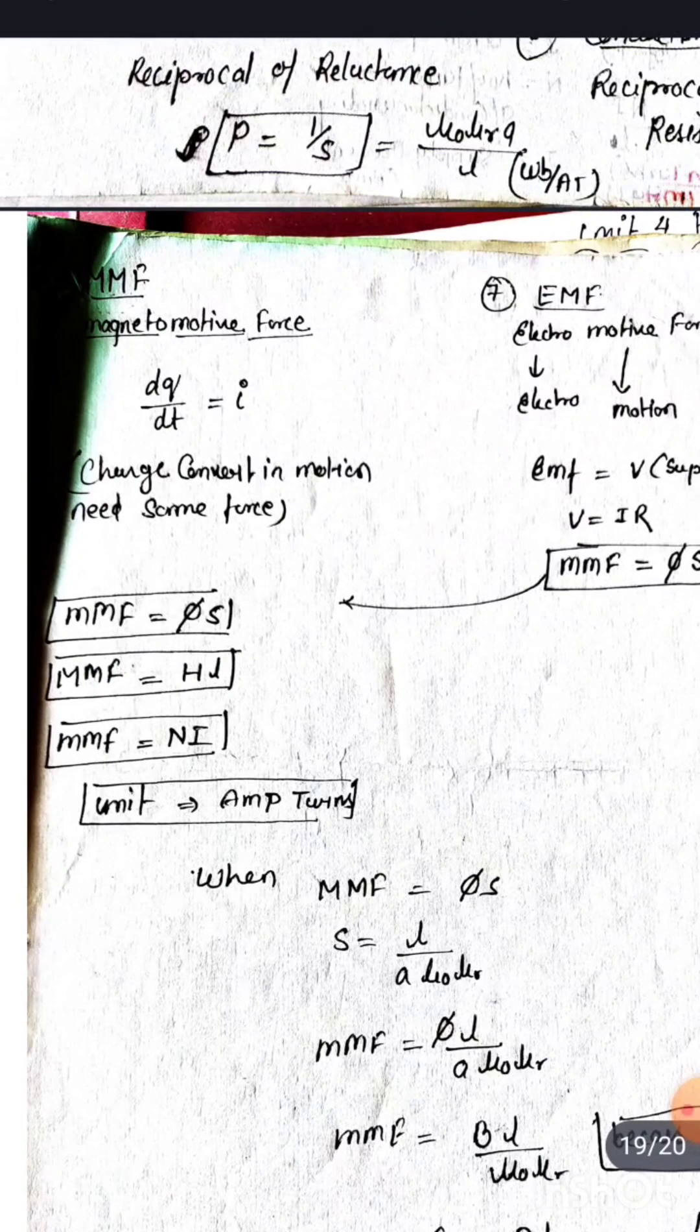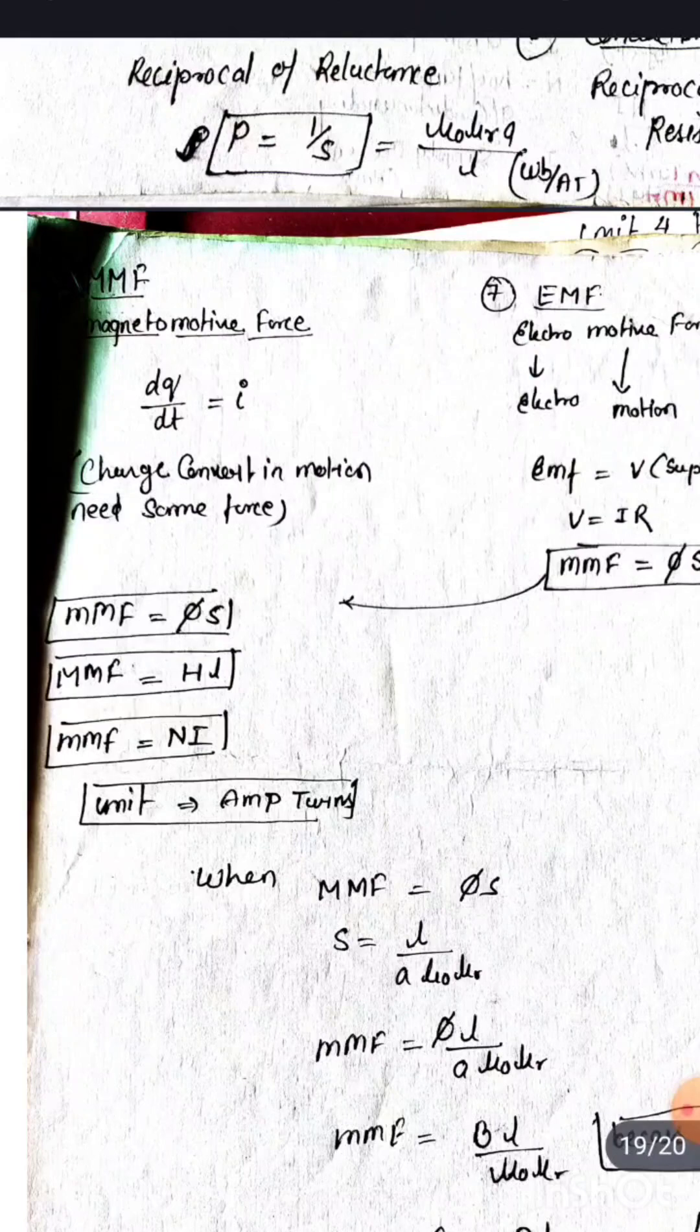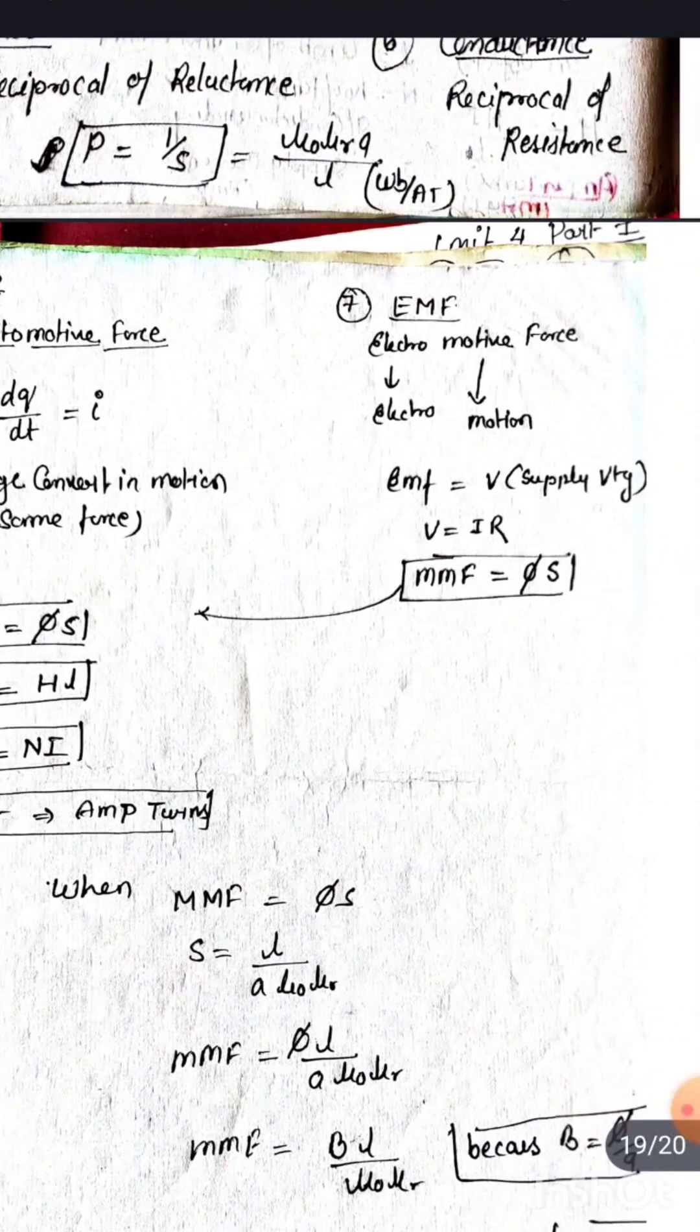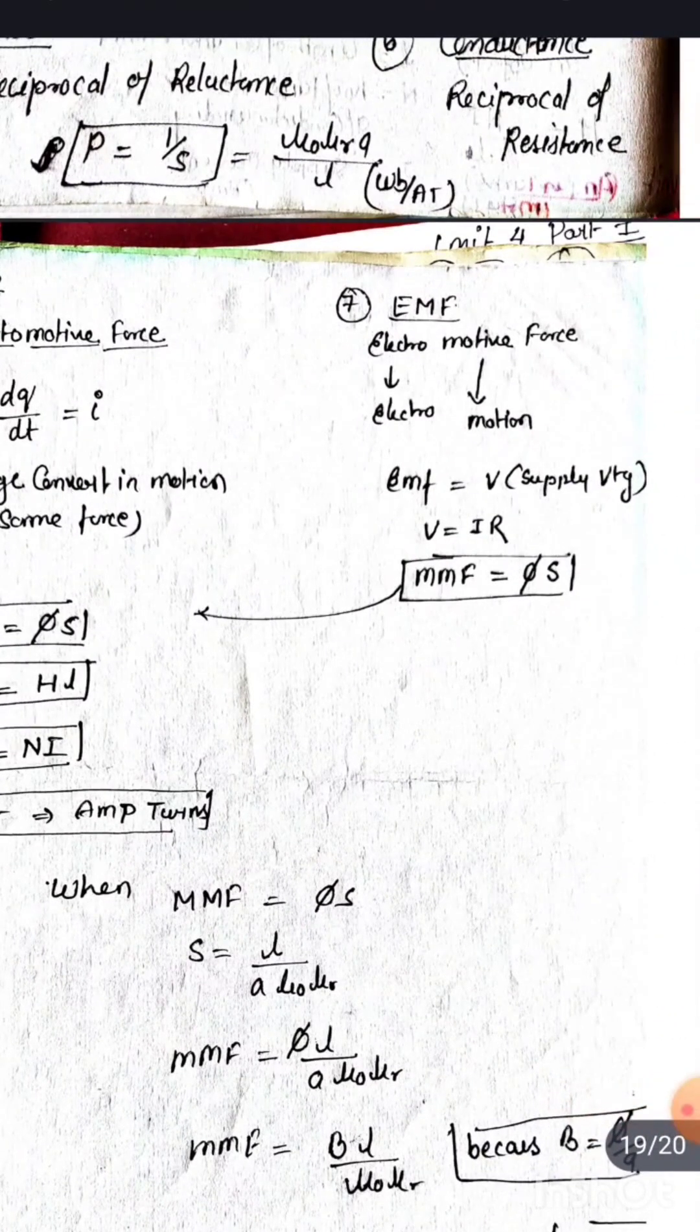In terms of number of turns, MMF is N times I, and the unit is ampere turns. EMF is always equal to the supply voltage.